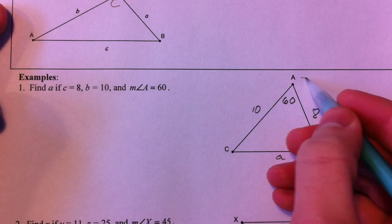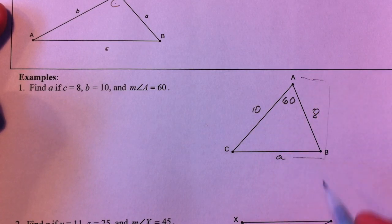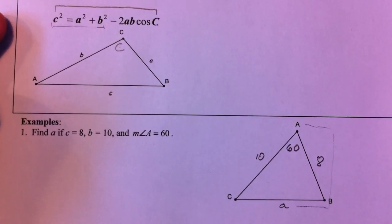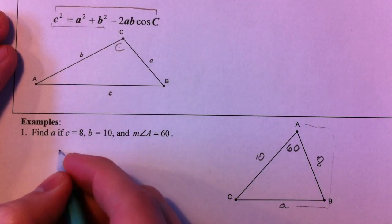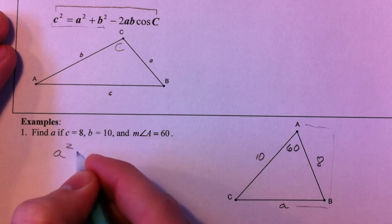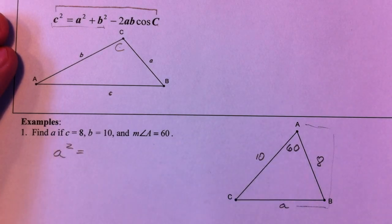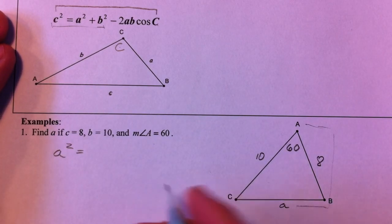Notice this side a, this angle A, and this side a is what we're looking for, and so in our equation they're going to be across from each other. And so I'm trying to find side a, and so that's going to be a² rather than c² in this case. I'm going to use my other two sides,